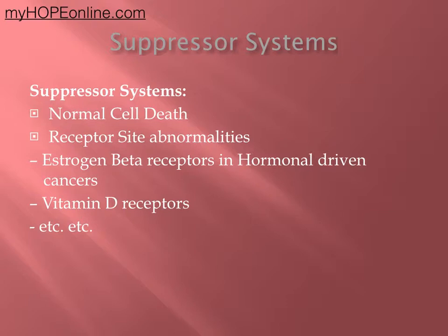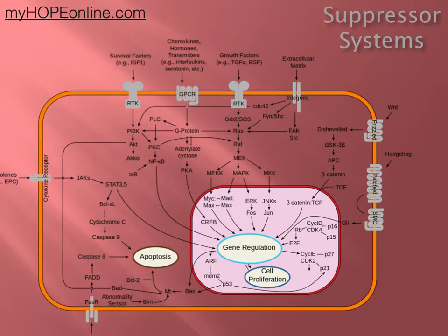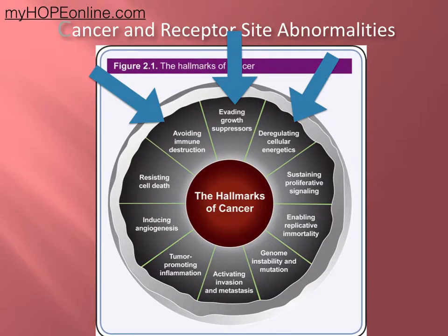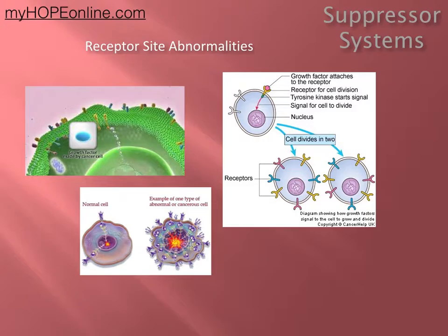Today we're going to talk about estrogen beta receptors and estrogen receptors inside the cell that affect different cancers. We showed you this picture last week — that is a very complicated schematic of a cell membrane, with receptors on the orange part, the nucleus in the middle, and an abbreviation of the different intracellular processes. We want to talk about what happens from a cellular membrane perspective today.